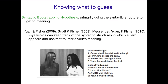More recent studies by Yuan and Fisher, Scott and Fisher, and Messenger Yuan and Fisher found that two-year-olds are quite smart when it comes to this. They can track syntactic structures over the course of several utterances to figure out what a verb ought to mean.